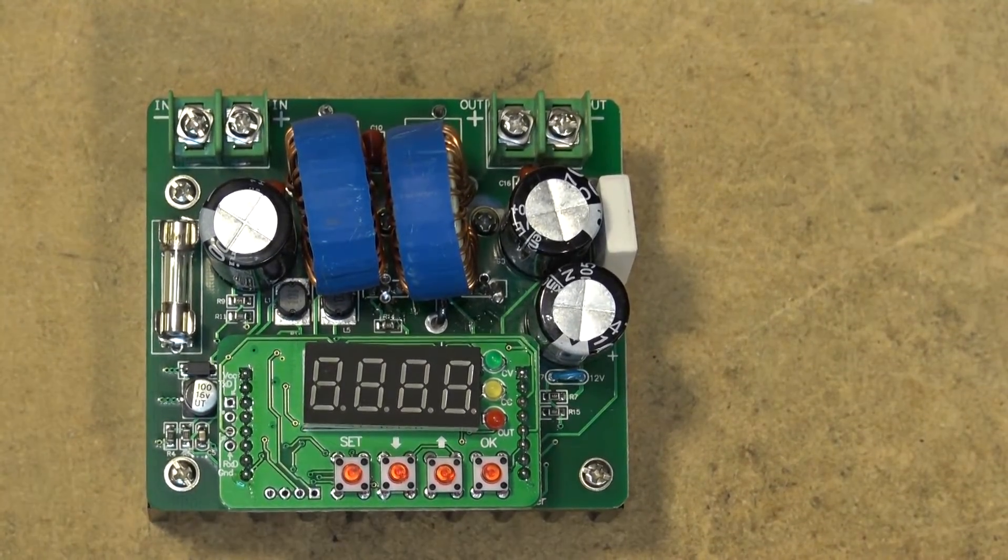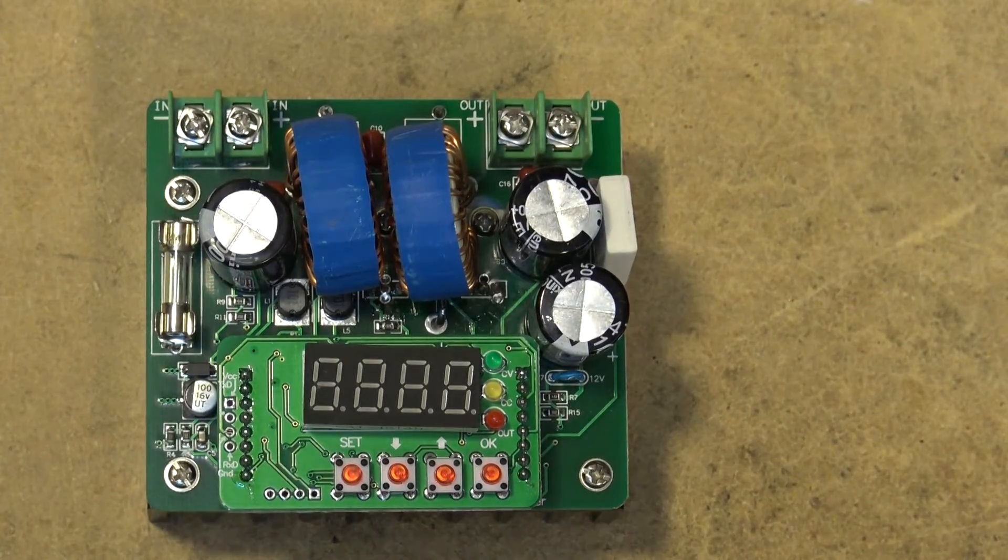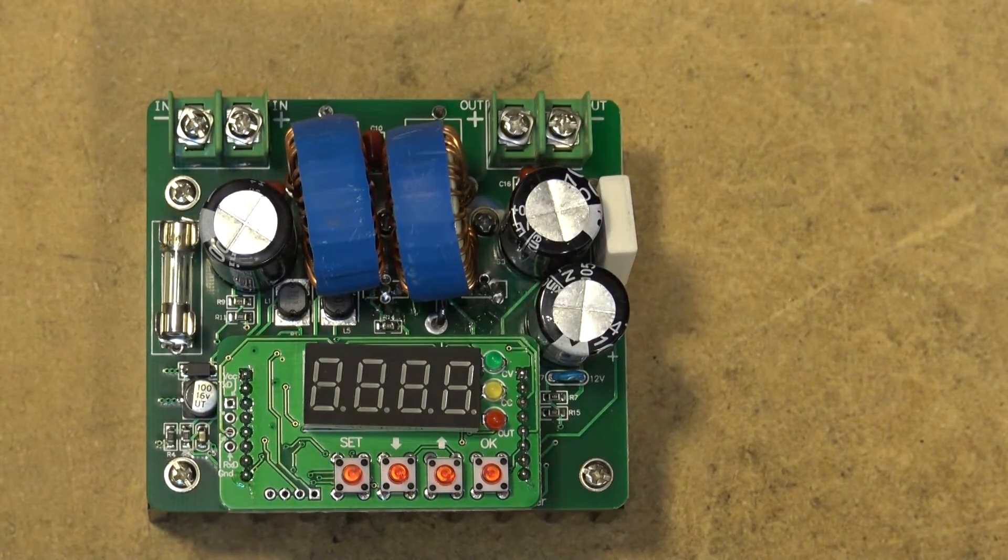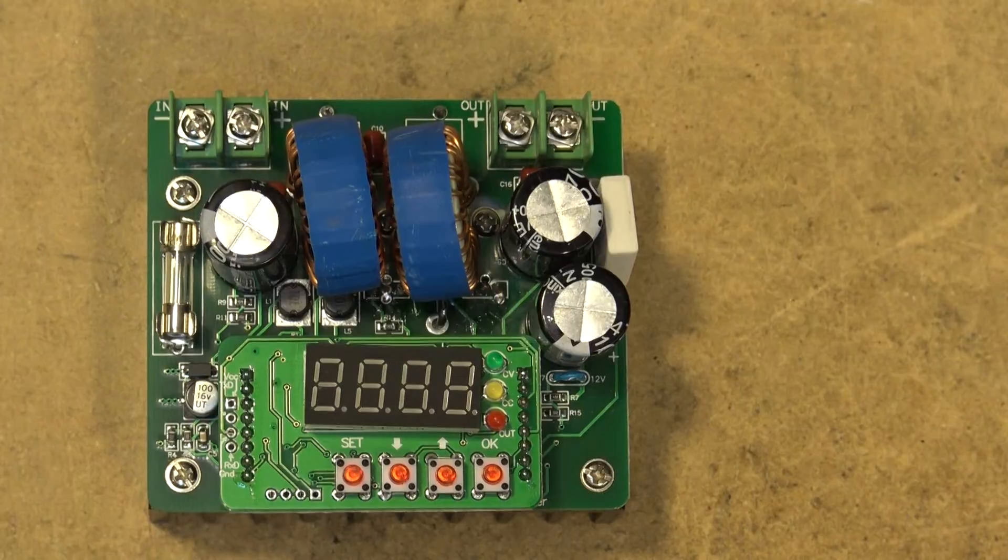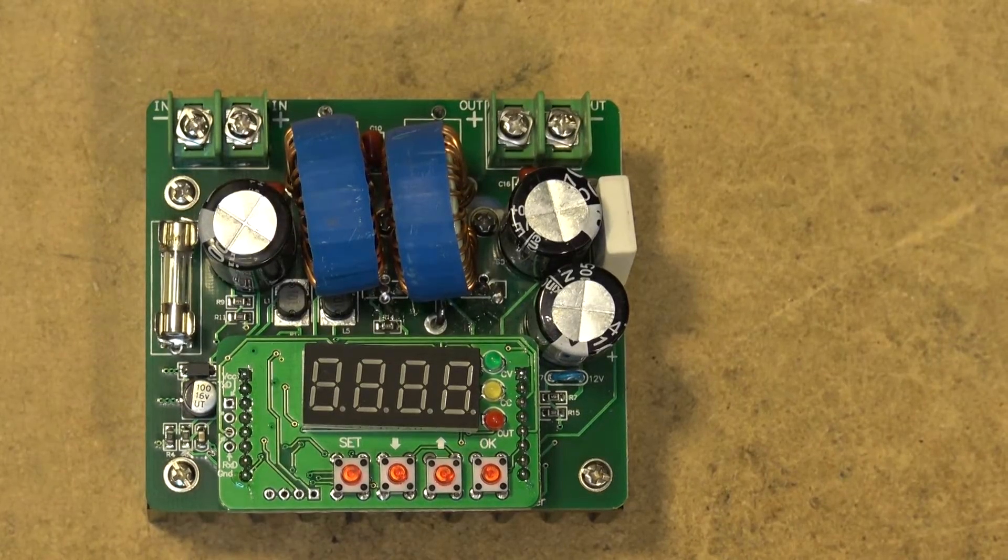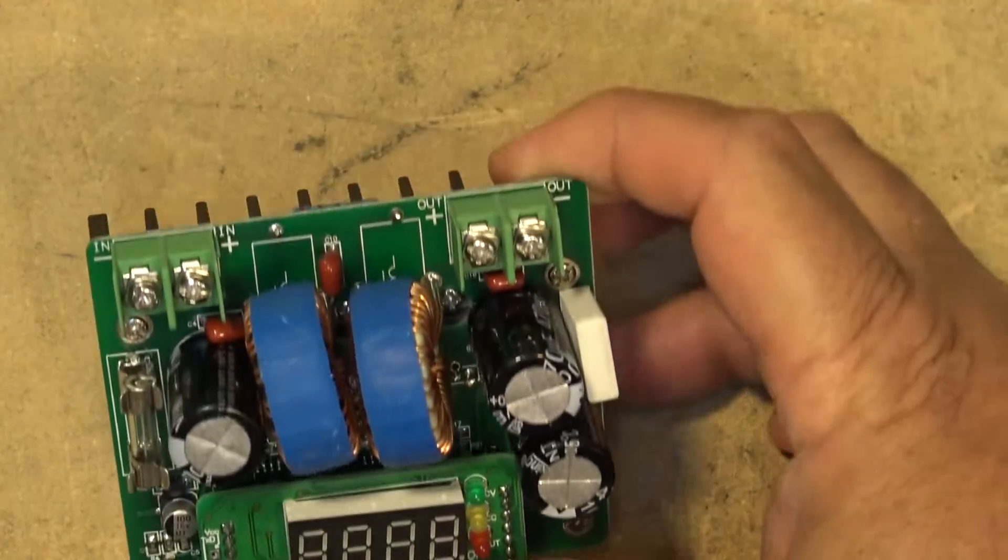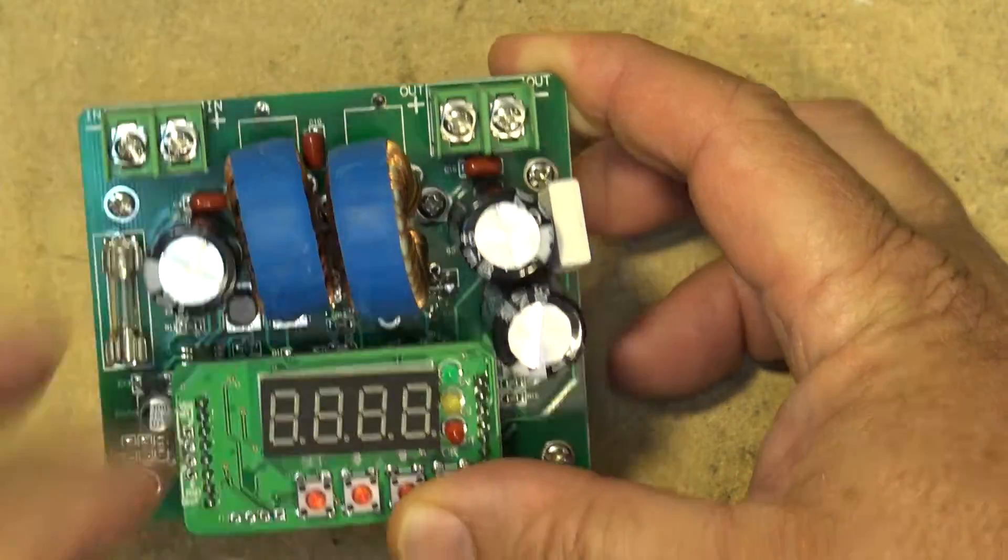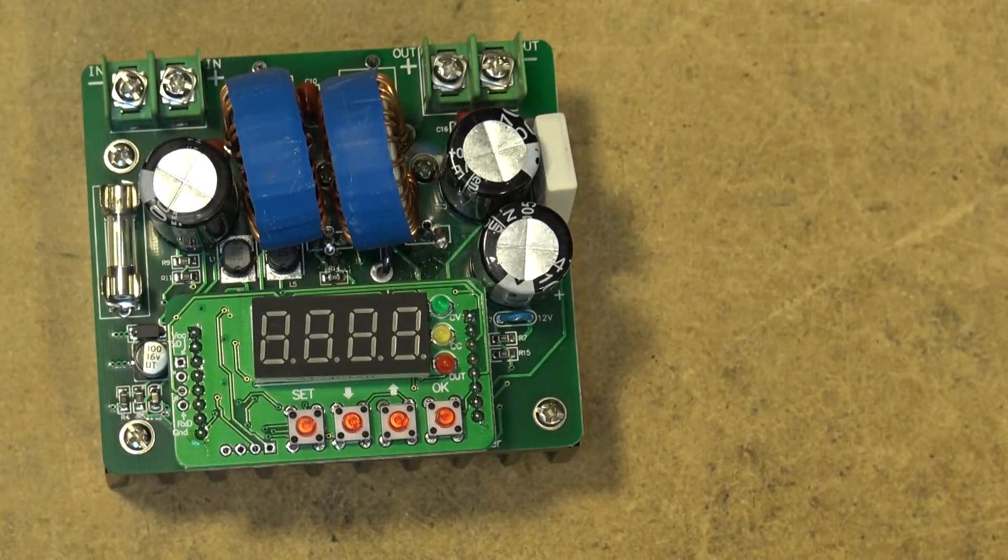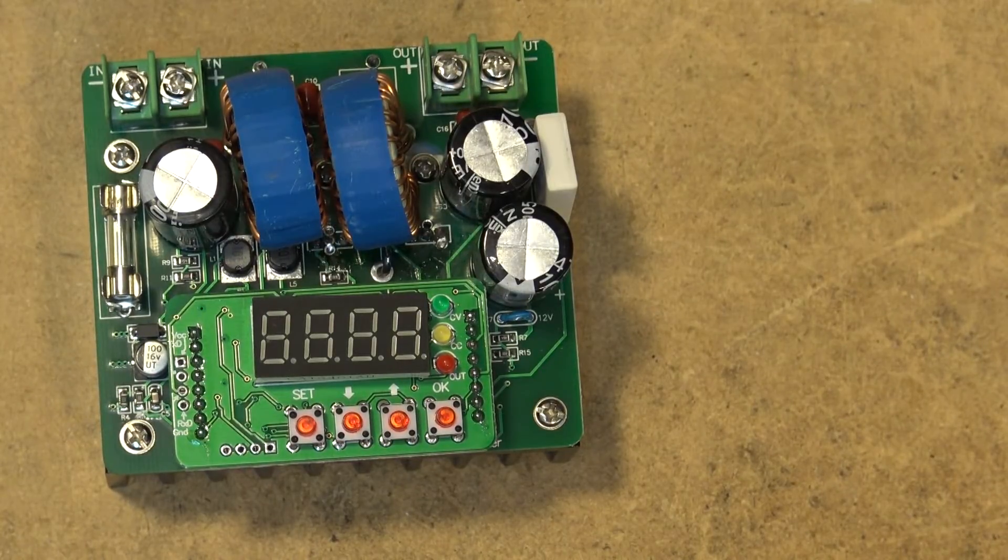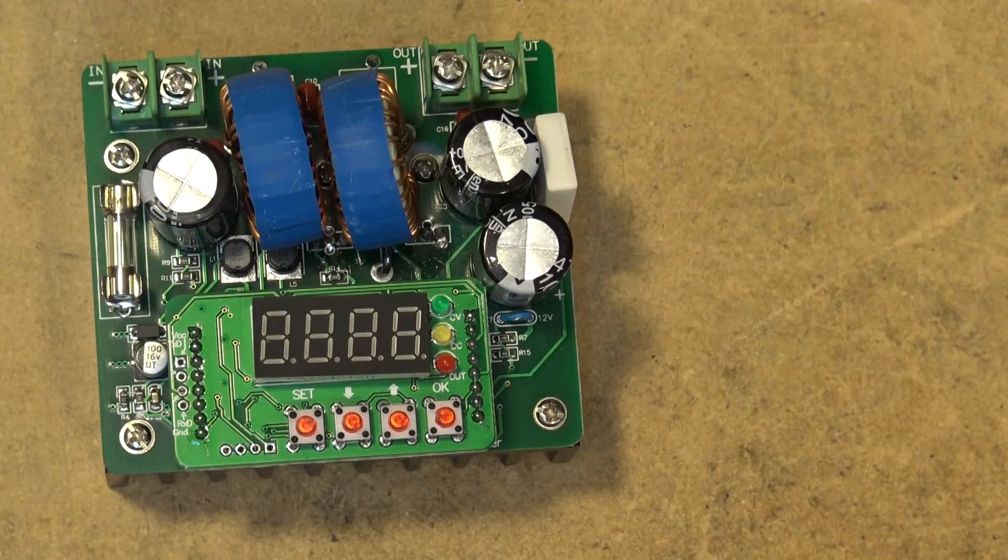I got this module from Banggood. It's a power booster, a buck converter. You feed it DC in and get DC out with positive and negative terminals. It goes up as high as 80 volts, taking anywhere from 8 to 12 volts input and giving you up to 80 volts out.